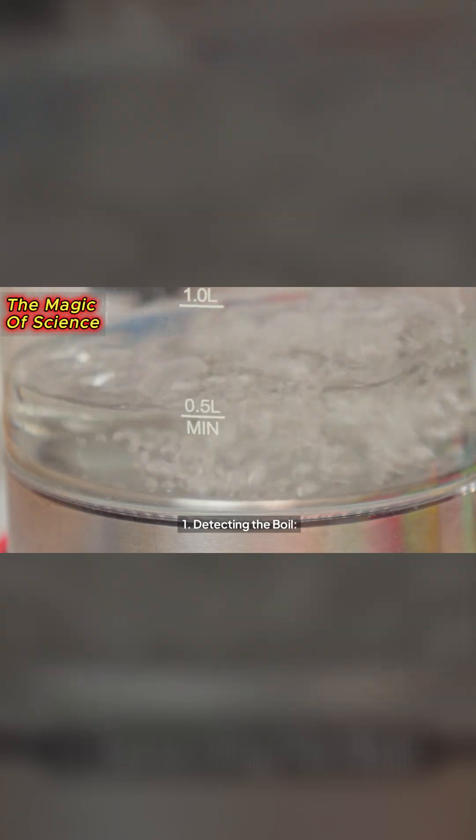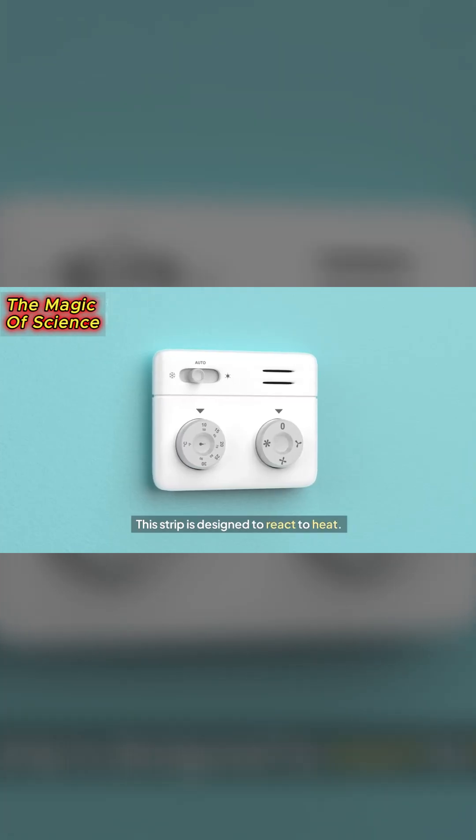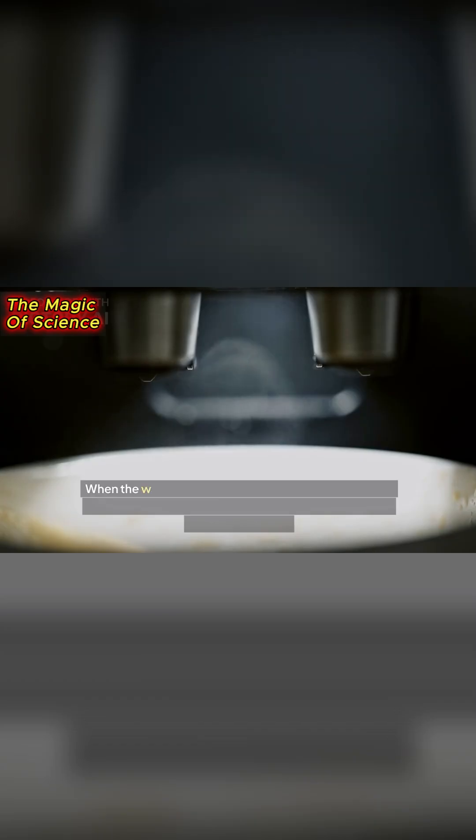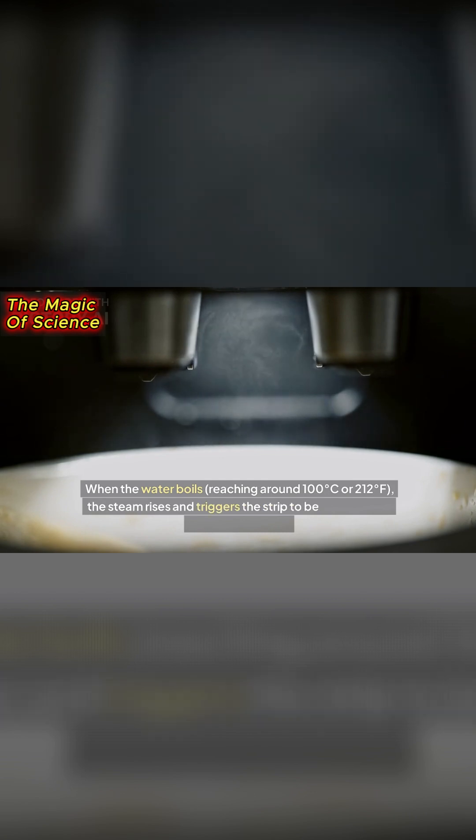1. Detecting the boil. Inside the kettle, there's a bimetallic strip in the thermostat. This strip is designed to react to heat. When the water boils, reaching around 100 degrees Celsius or 212 degrees Fahrenheit, the steam rises and triggers the strip to bend due to the high temperature.